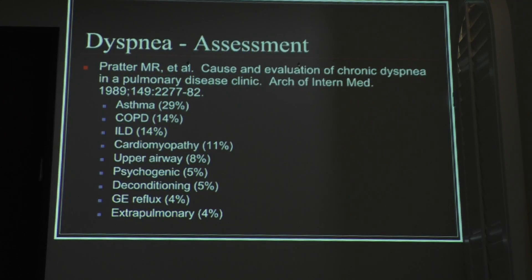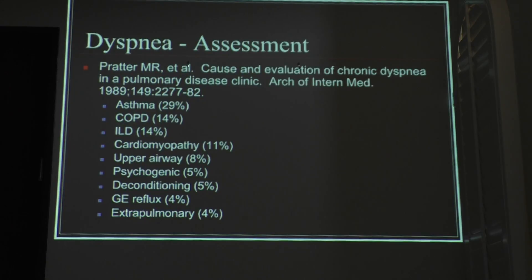These are the different types and their frequencies: asthma is probably the most common one, followed by COPD, interstitial lung disease about 14%, cardiomyopathy, upper airway disease, psychogenic deconditioning, reflux, and extra-pulmonary causes.